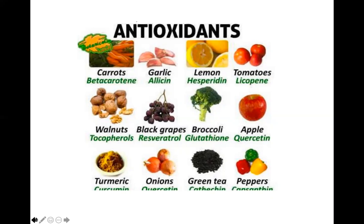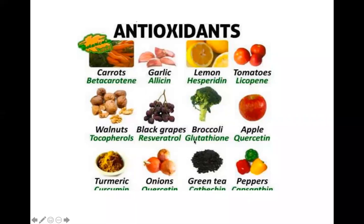Oxygen is a very reactive molecule and can in fact be quite toxic. Many of the foods we eat have large complex molecules that help us deal with the toxic effects of oxygen. This shows the various kinds of antioxidant molecules — lycopene, tocopherols, resveratrol, which is supposed to be an anti-aging agent, and things in broccoli like glutathione. We're going to talk about what these molecules are and what their function is.